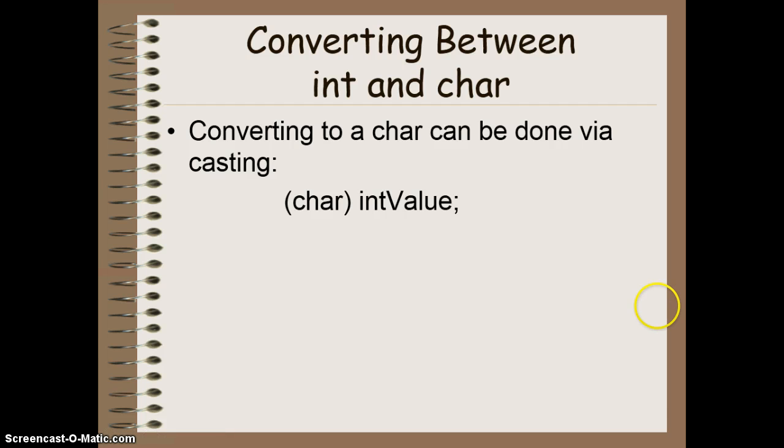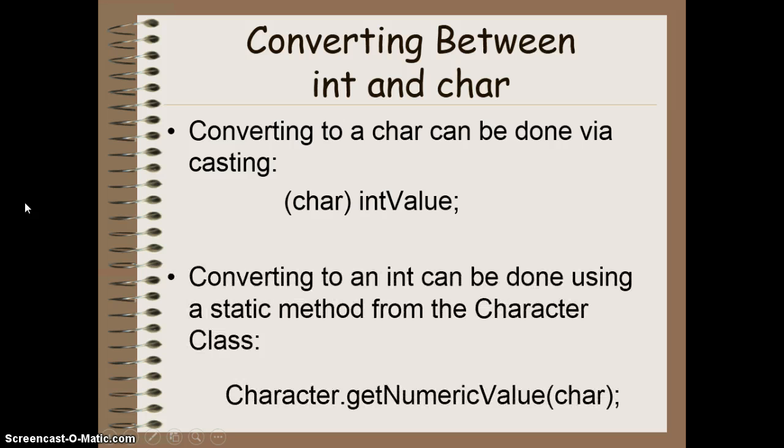So if we want to convert between an integer and a char, you can do this by casting. So you can cast it directly. The int value casts the char. It gets you the char for that. But if you want to go to an integer, it's a little bit more difficult. You have to use one of the methods from that character wrapper class. The method specifically would be the getNumericValue. You provide the character you're trying to get the numeric value of, it will return the Unicode value of that particular character.